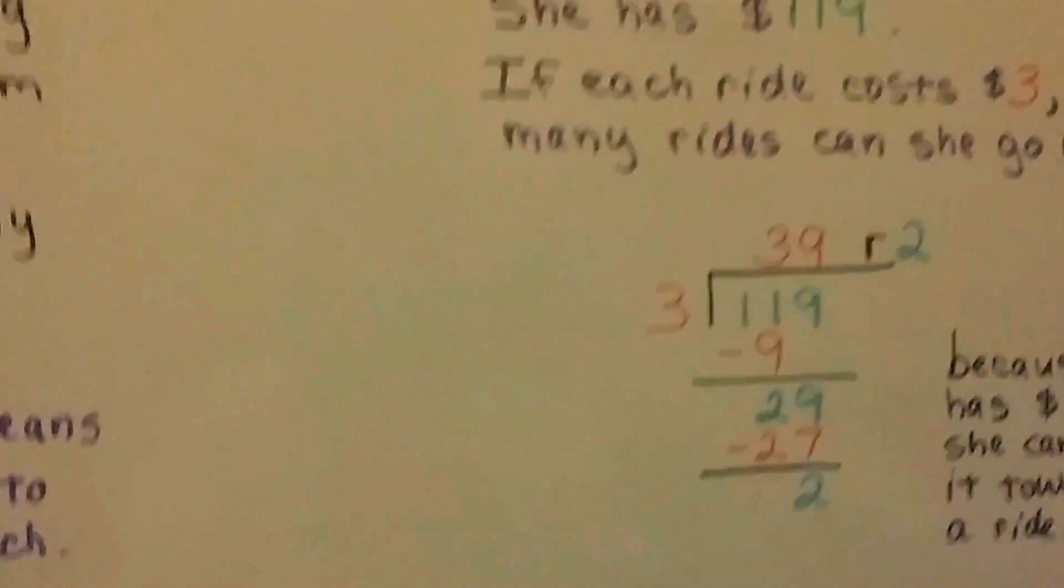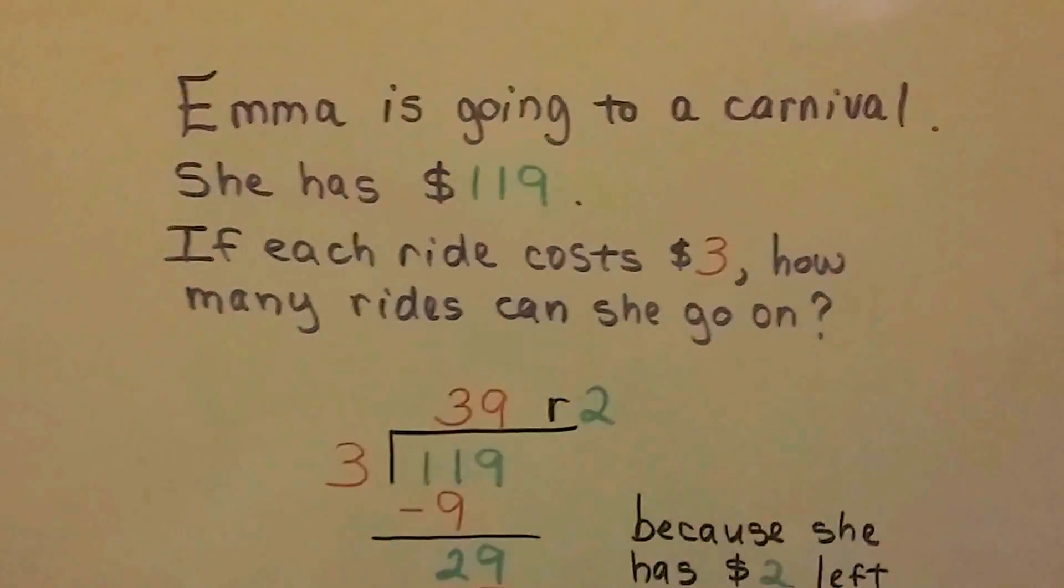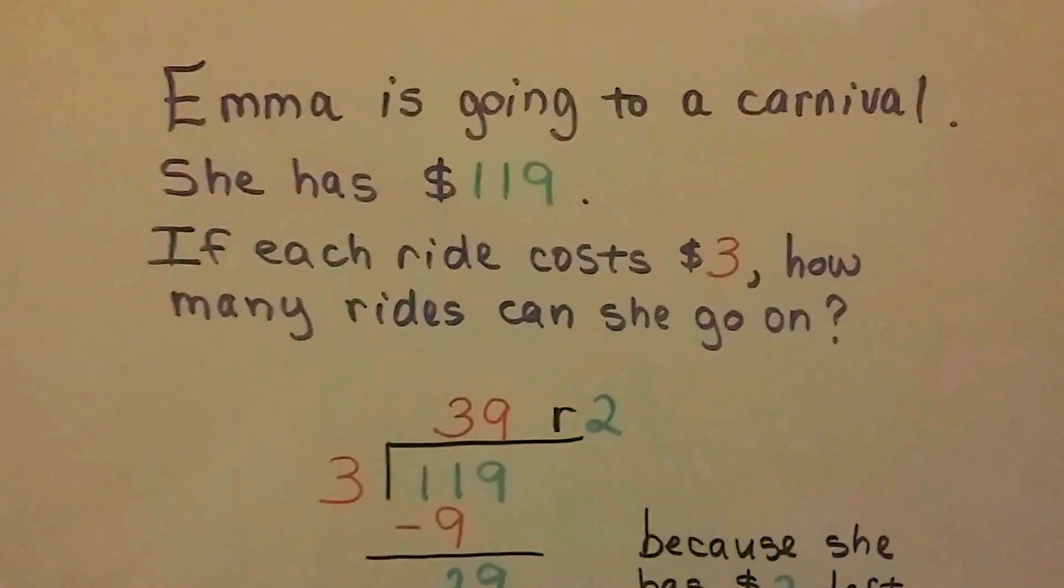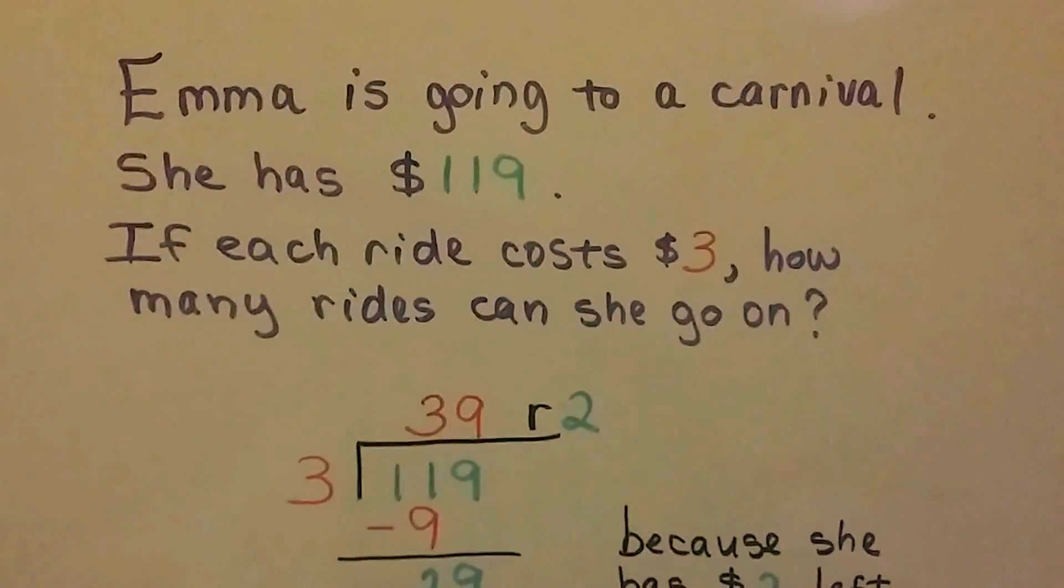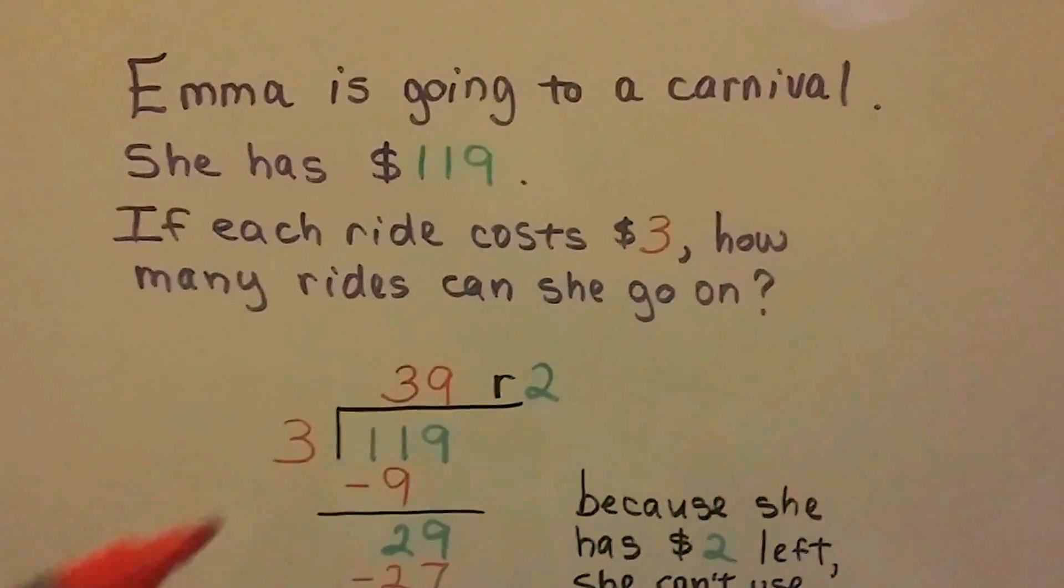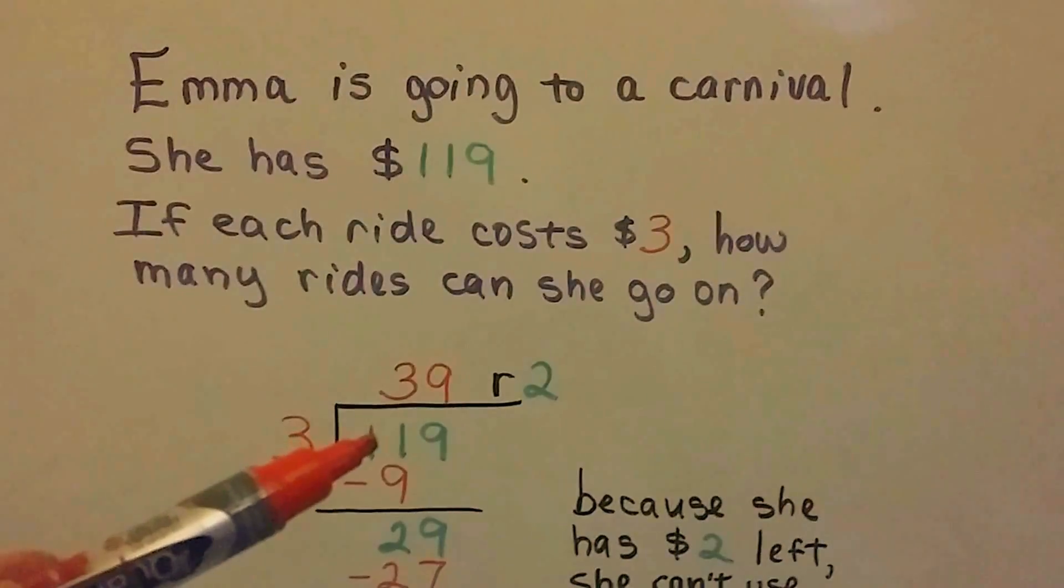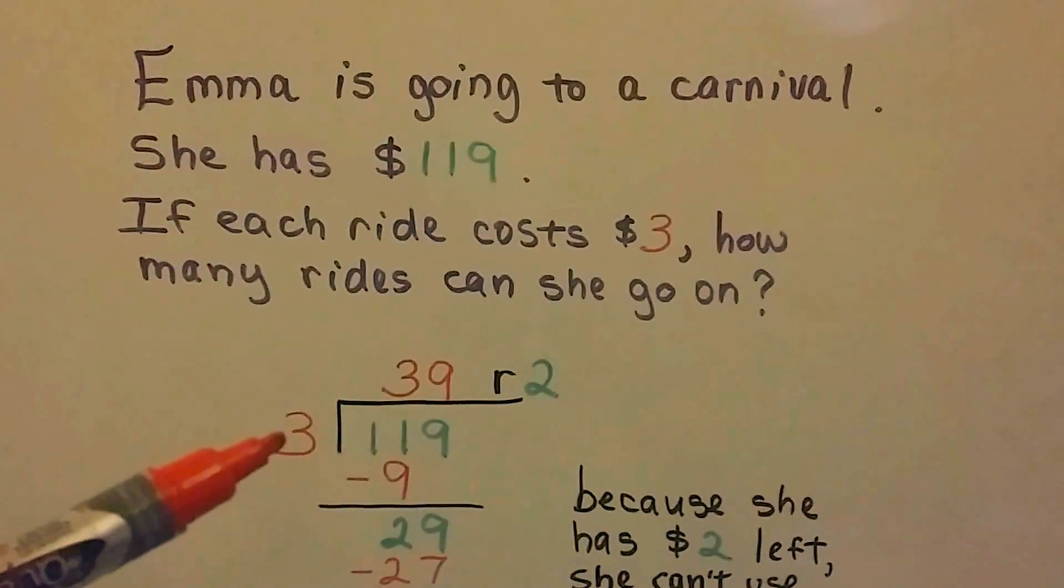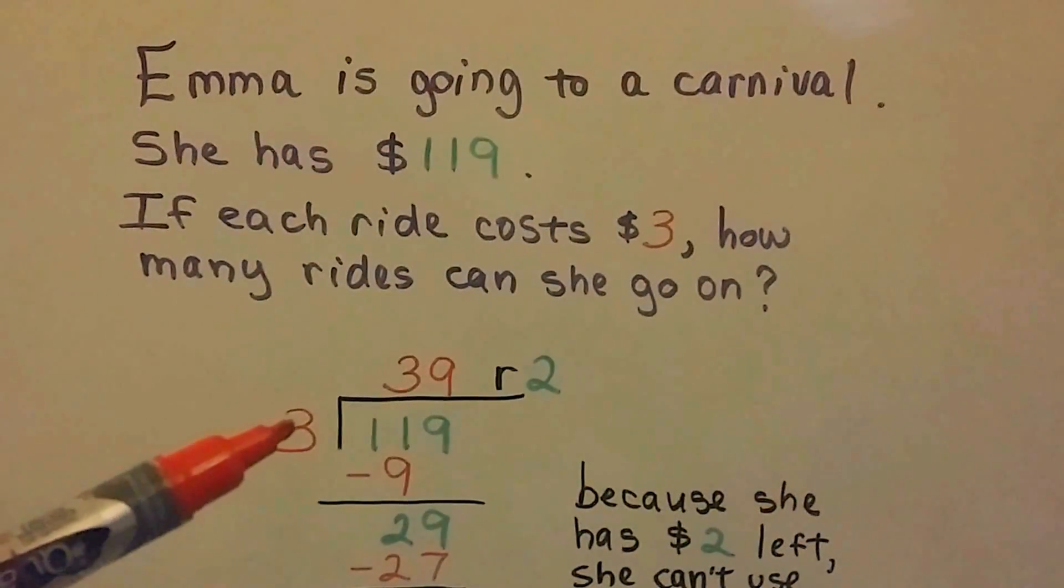Okay, Emma is going to a carnival. She has $119, and each ride costs $3. So how many rides can she go on? So the $119 is going to be the dividend. The $3 for each ride is going to be the divisor.